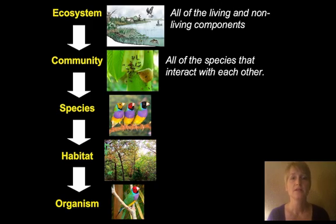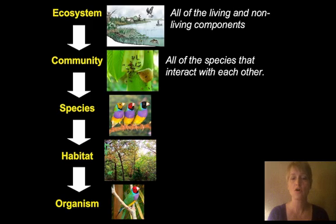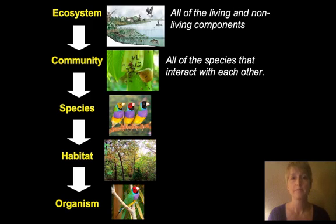A community is all of the species that interact with each other. When we talk about a community, we're not talking about just one species — we're talking about all the species that are there interacting with each other. So in this picture right here, we see the ants, but they're on a plant, and that plant is a species as well.